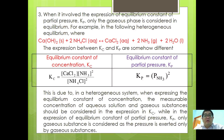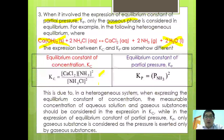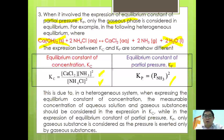When expressing the equilibrium constant of partial pressure, Kp, only the gaseous phase is considered. For example, consider: Ca(OH)2 + 2NH4Cl → CaCl2 + 2NH3 + 2H2O. Kc is expressed as [CaCl2][NH3]² over [NH4Cl]², omitting water and calcium hydroxide. However, Kp is only the partial pressure of ammonia squared, because pressure applies only to gaseous substances.